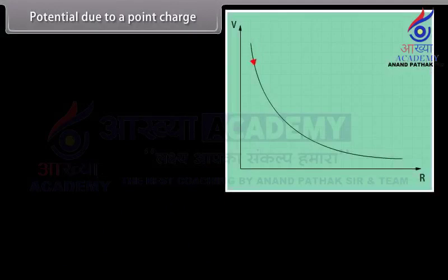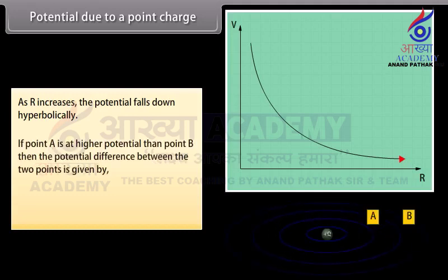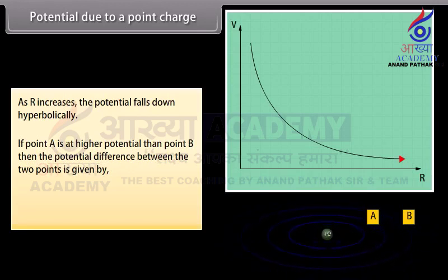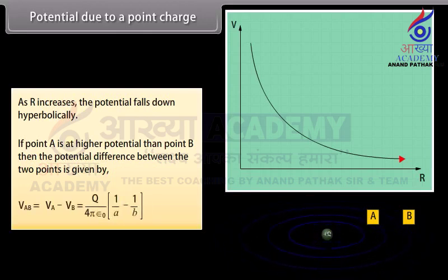We can show in the graph that as R increases, the potential falls down hyperbolically. If point A is at higher potential than point B, then the potential difference between the two points is given by V_AB equals V_A minus V_B. Substituting the values of V_A and V_B, we get V_AB equals Q divided by 4πε₀ multiplied by 1 upon A minus 1 upon B.